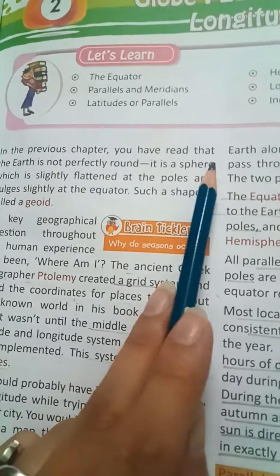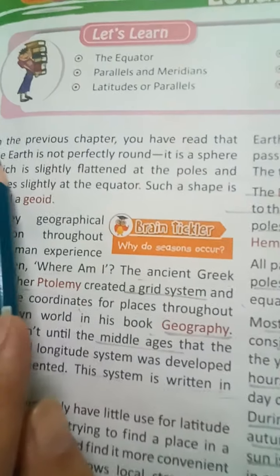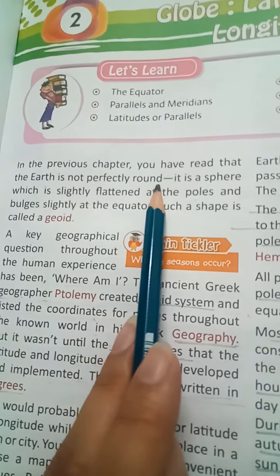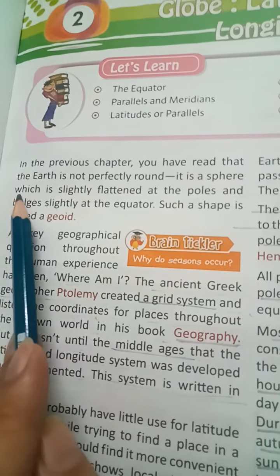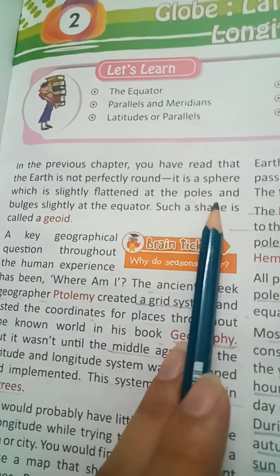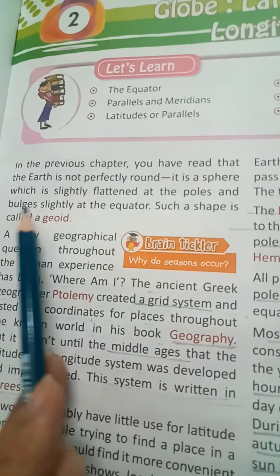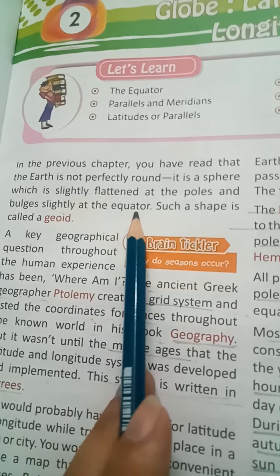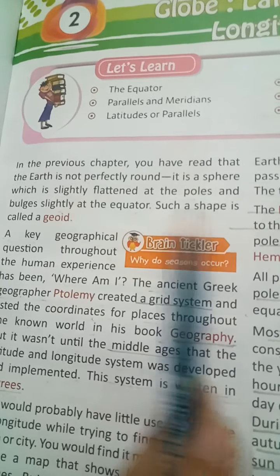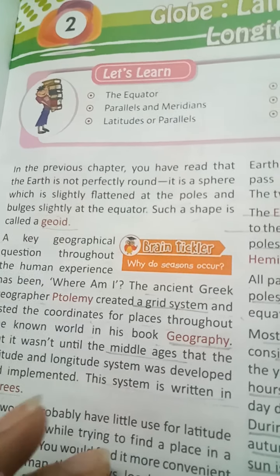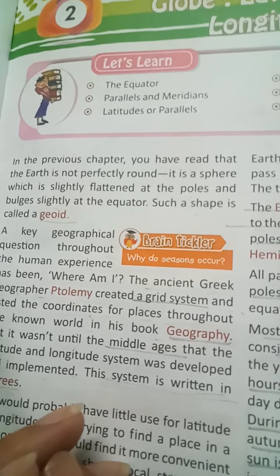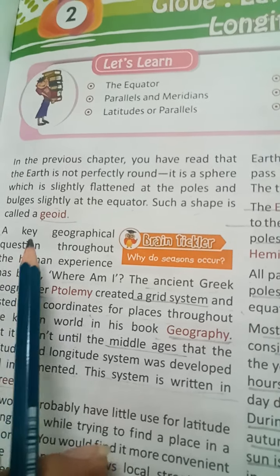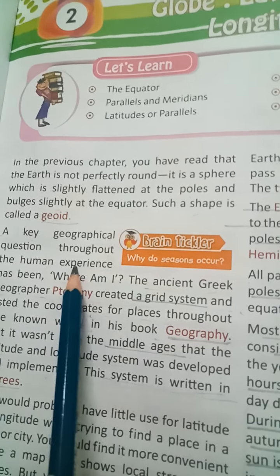In the previous chapter you have read that the earth is not perfectly round. It is a sphere which is slightly flattened at the poles and bulges slightly at the equator. Such a shape is called a geoid.